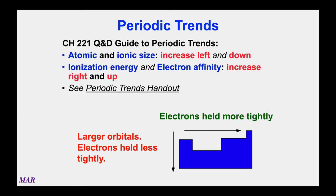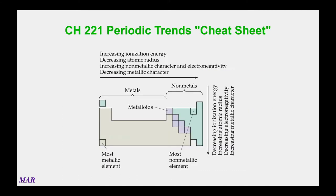There are lots of reasons electrons are held more tightly going left to right, and we'll briefly go over some. Also, as you go top to bottom on the periodic table, the orbitals get larger — going from 1s to 2s to 3s to 4s. As the orbitals get bigger, the outer electrons are held less tightly to the nucleus because they're farther away. That's why the trends are possible, though they have exceptions.